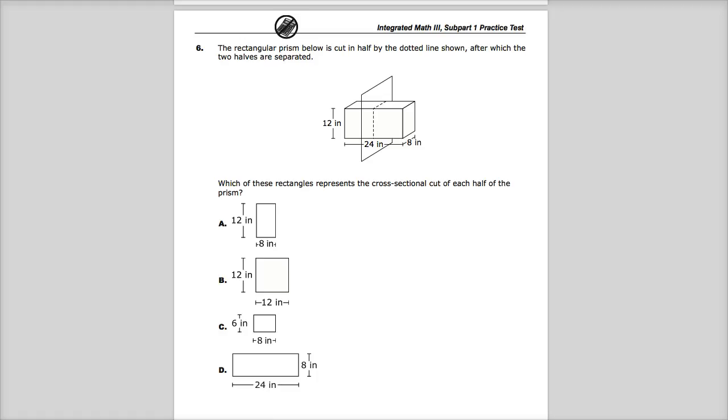The question says the rectangular prism below is cut in half by the dotted line shown, after which the two halves are separated. Which of these rectangles represents the cross-section cut of each half of the prism?